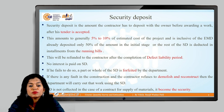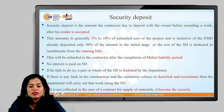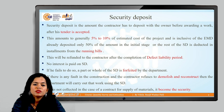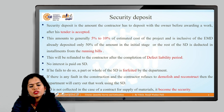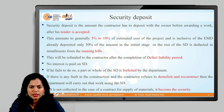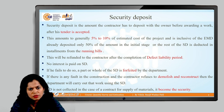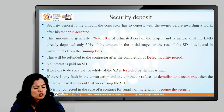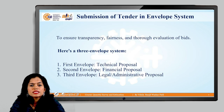The security deposit is refunded after the defect liability period, which is mentioned in the tender conditions — typically one to two years. If no repairs are needed, the whole amount is refunded. If repairs cost one lakh out of ten lakhs withheld, one lakh is used for repairs and the remaining nine lakhs are refunded after the defect liability period.